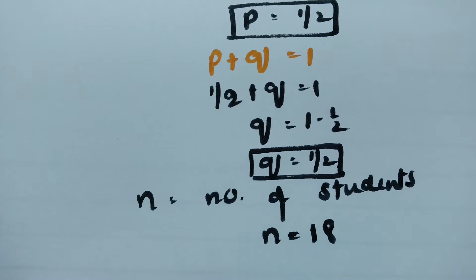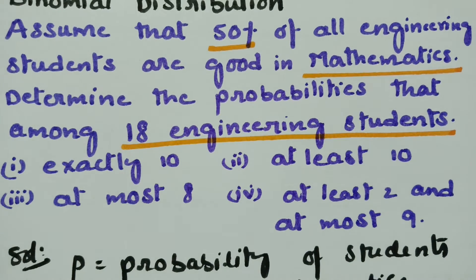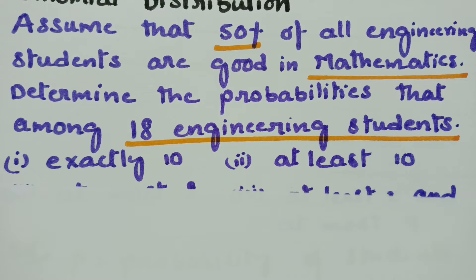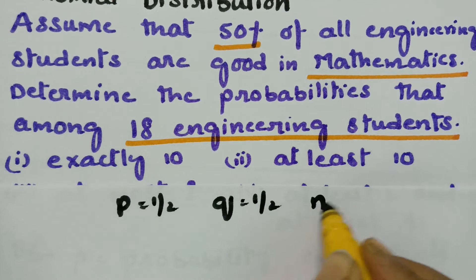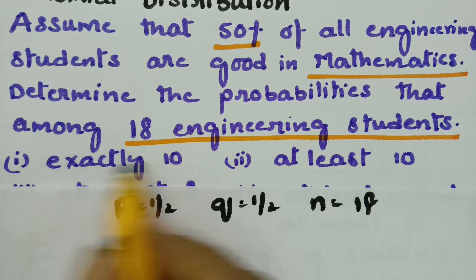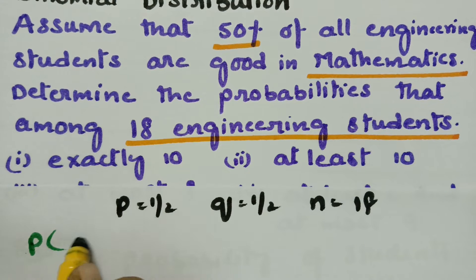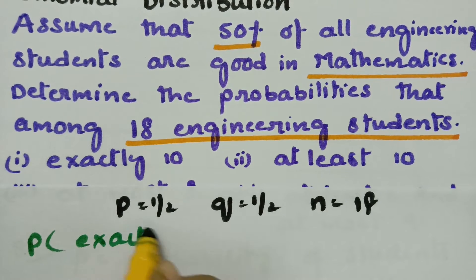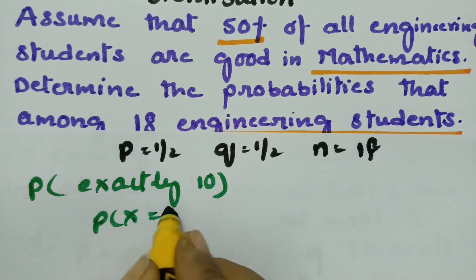Now we are going to calculate the probabilities. We have P equal to 1/2, Q equal to 1/2, and N equal to 18. First, what is the first case? Exactly 10. The probability to calculate that exactly 10 students are good in maths — here R is equal to 10, that is X is equal to 10.